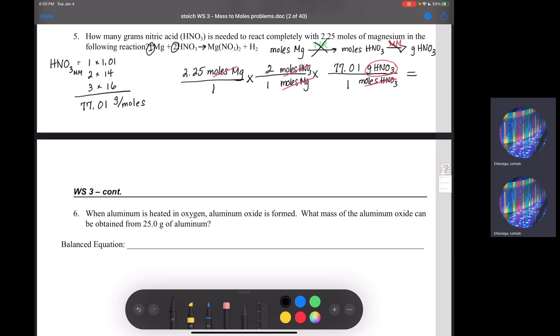Okay, so we followed our molar map properly. And as long as our calculator does what we want it to do, we should come up with the right answer. So how to key this into your calculator. Put 2.25 multiplied by 2 multiplied by 77.01. And you should get an answer. The answer that I got is 346.55. Don't forget your unit, gram of nitric acid. And that is the answer to number 5.